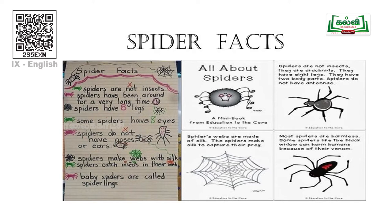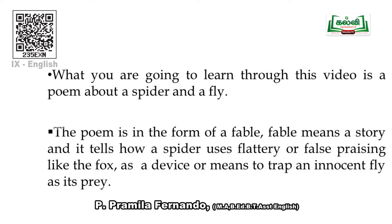Spiders do not have antennae. Spiders' webs are made of silk. Spiders make silk to capture their prey. Most spiders are harmless. Some spiders like the black widow can harm humans because of their venom.